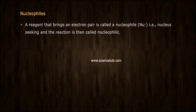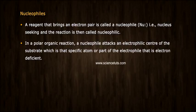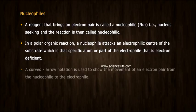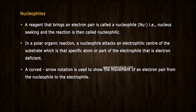Nucleophiles. A region that brings an electron pair is called a nucleophile, NU, that is nuclear-seeking, and the reaction is then called nucleophilic. In a polar organic reaction, a nucleophile attacks an electrophilic center of the substrate, which is the specific atom or part of the electrophile that is electron-deficient. A curved arrow notation is used to show the movement of an electron pair from the nucleophile to the electrophile.